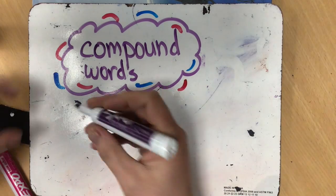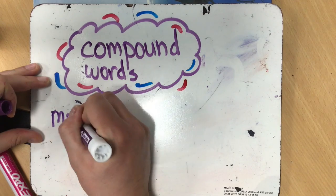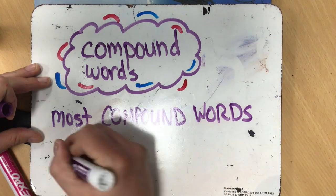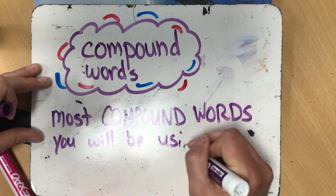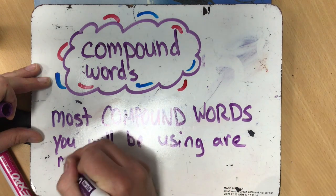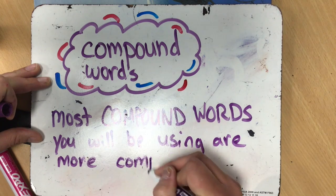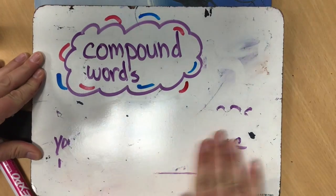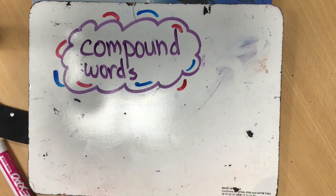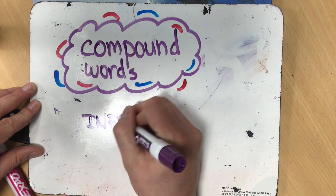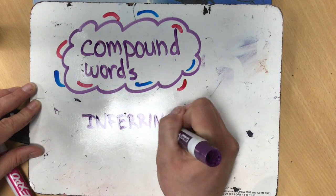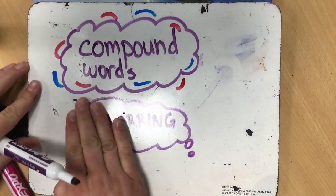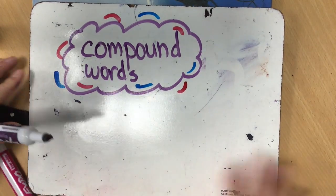Now most of the compound words that you guys are coming across right now in your reading and in our discussions are a little bit more complex, and they require something that we call inferring — or thinking a little bit beyond what is there in front of us. So we can't just rely on the two words and those definitions. We have to do a little bit more thought work. Let's take a look at some examples here.